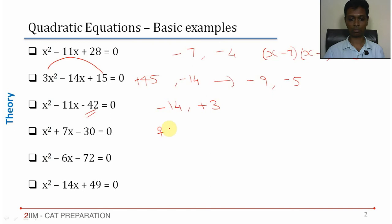This should be done as +10 and -3. 10 - 3 is 7. +10 into -3 is -30.